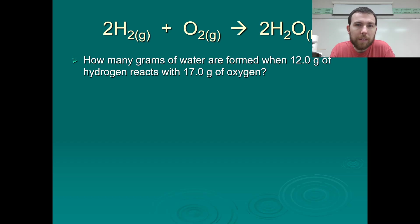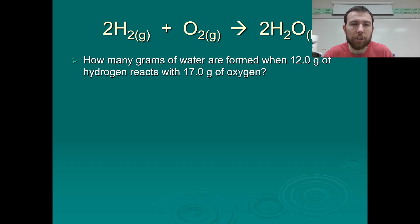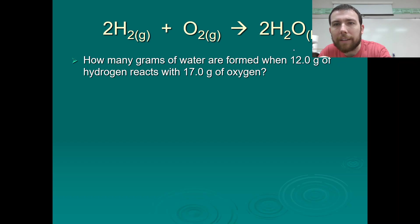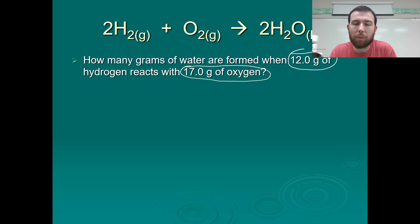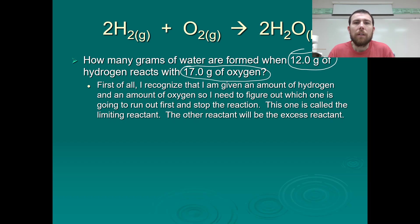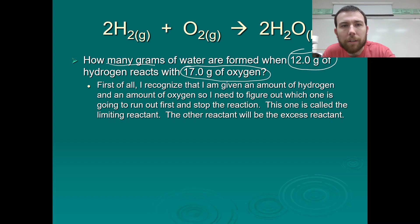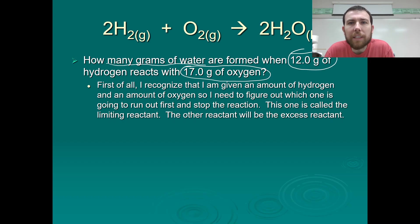Now let's look at the same equation but with gram quantities. How many grams of water are formed when 12 grams of hydrogen reacts with 17 grams of oxygen? When I look at this, I've got 12 grams of hydrogen and 17 grams of oxygen — two givens — so this is a limiting reactant problem. I need to figure out which of these is my limiting reactant.